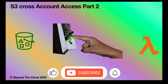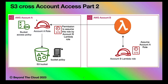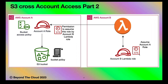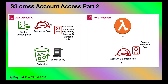Let me show you the architecture diagram. We have AWS account A where we have the S3 bucket. We are going to access this S3 bucket of AWS account A from AWS account B through a Lambda also situated in account B. In account B we will create a Lambda role which has permission to assume an AWS account A role. In account A, we create a role with S3 bucket permissions and a trust relationship with the Lambda role in account B.